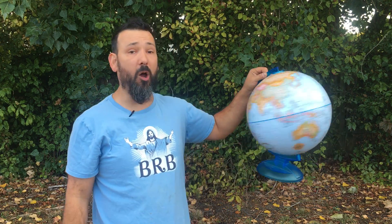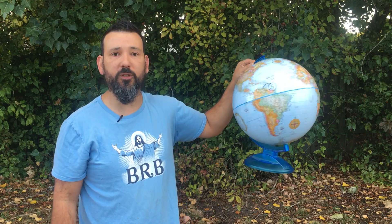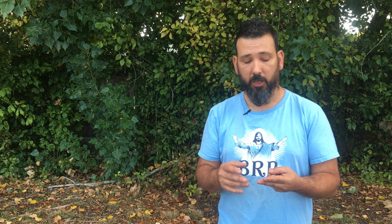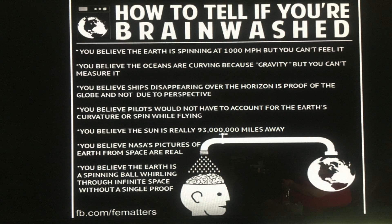In order to not believe the earth is a globe, you'd have to believe the entire world is in on a conspiracy: the entire space station network, the military — since anyone using maps uses globe maps which don't interchange with flat earth maps — transportation, airplanes, ships, contractors, surveyors, teachers, and everyone who's ever been to the South Pole. At this point we're bordering on either a cult or the Dunning-Kruger effect, and I don't mean any insult by that.